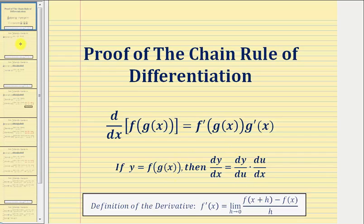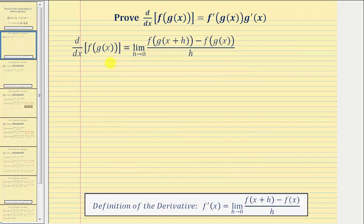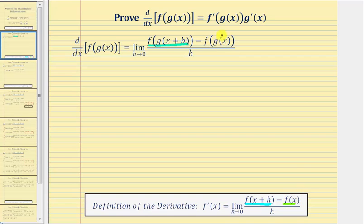To begin our proof, we'll apply the limit definition of the derivative. So the derivative of f of g of x with respect to x is equal to the limit as h approaches zero of: for f of the quantity x plus h, in our case we'd have f of g of the quantity x plus h, minus f of g of x, all divided by h.